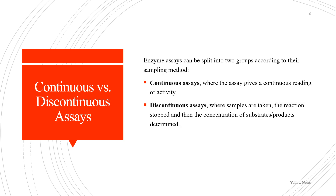Talking about continuous and discontinuous assays: enzyme assays can be split into two groups according to their sampling method. Continuous assays give a continuous reading of activity, while in discontinuous assays, samples are taken, the reaction is stopped, and then the concentration of substrate or products is determined.